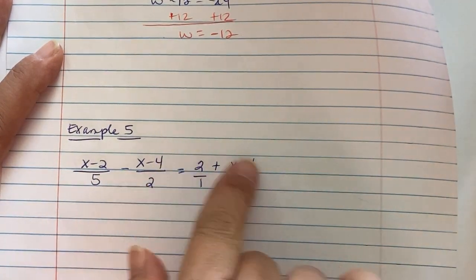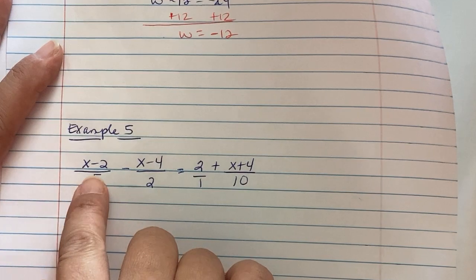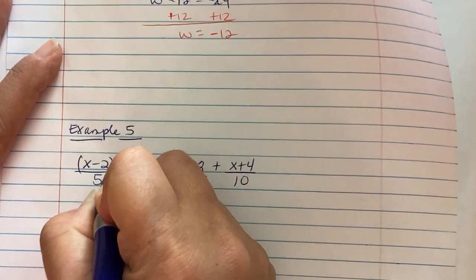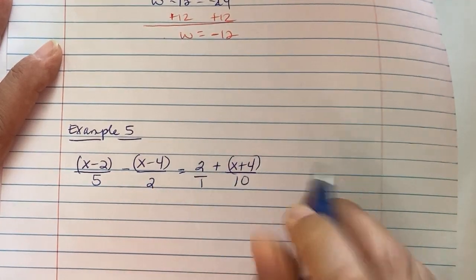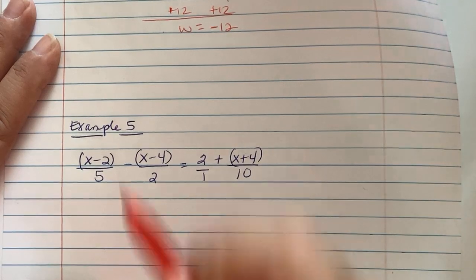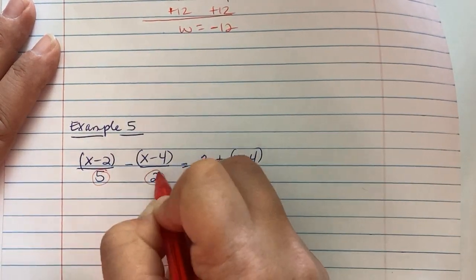Now notice that these numerator values have binomial pieces, but it's an x minus 2. So put parentheses anytime you come to a problem like this. Put parentheses around multiple terms shared in the numerator line.